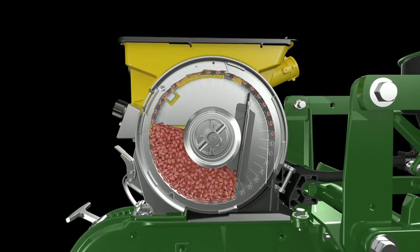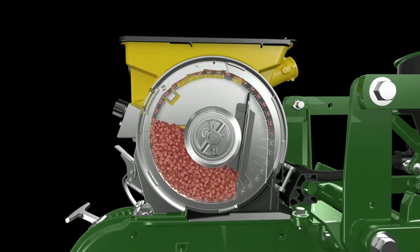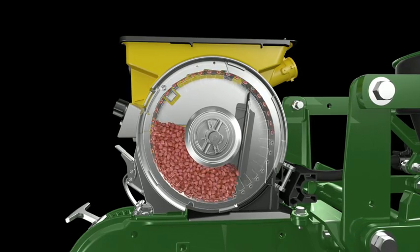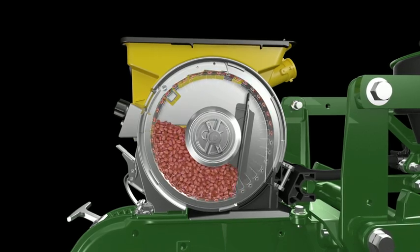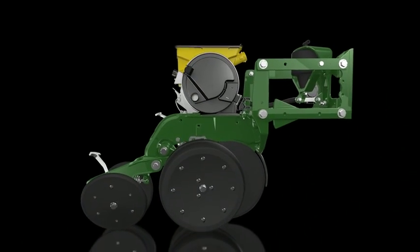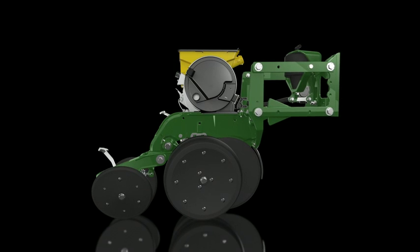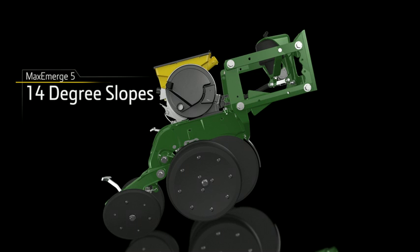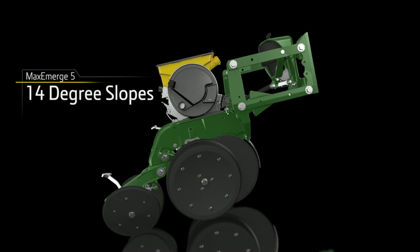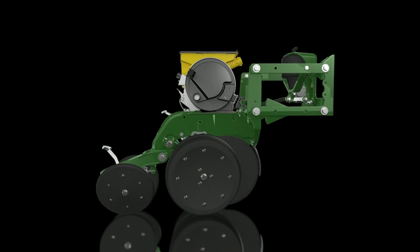But let's not blow past the fact that this perfected row unit singulates a wide range of seed sizes and shapes for precise planting. Regardless of variety, your valuable seed is never wasted. Even on rolling terrain and side hills, MaxEmerge 5 makes every seed matter.